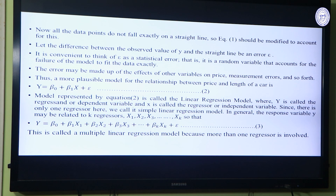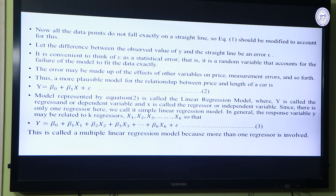Each point is lying either upward or downward from the straight line, and this discrepancy can be called error. Where will that red point be? We do not know that — that is why it is completely random. It is beyond our control. We do not know how much difference there will be between the actual value and the expected value of the price of the car. To make the model more perfect we should incorporate this error. Otherwise, this will be like a laboratory experiment, which is what we do generally in the regression learned in statistics. We have to incorporate this error, and this error is a perfectly random error.